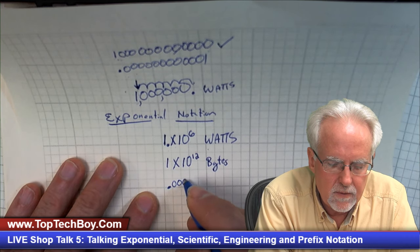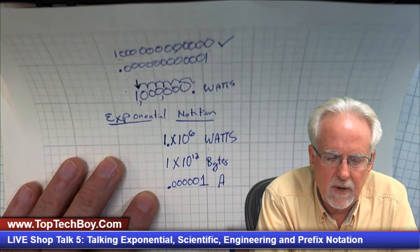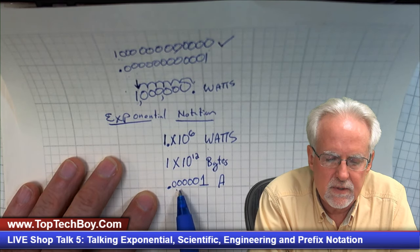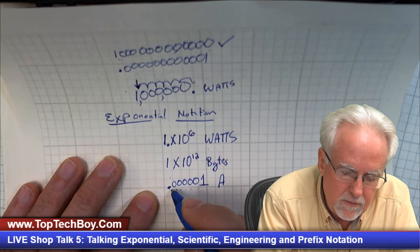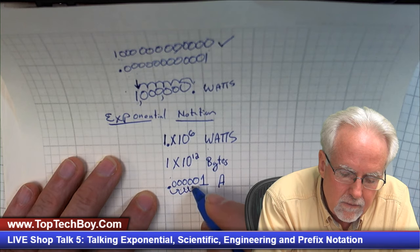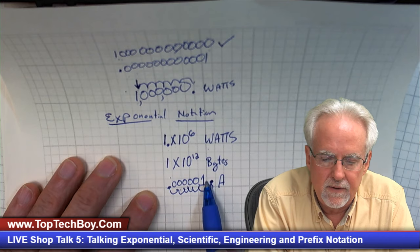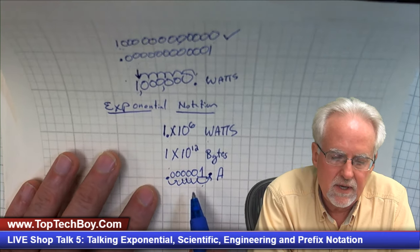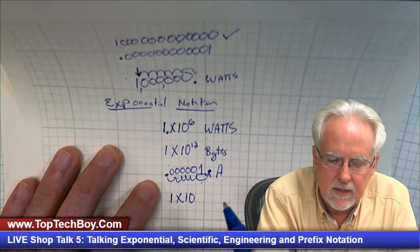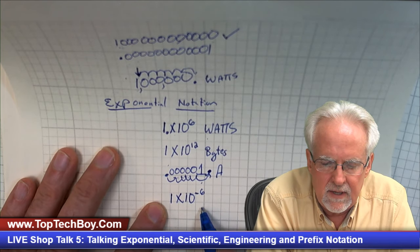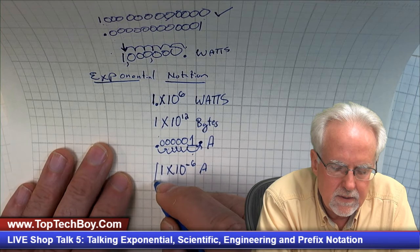If you just count the zeros, that won't work on all numbers. Let's look at a microamp: that would be 0.000001 amps. When you're going the other way, you can't count the zeros because there are five zeros but six places to move. Counting the zeros doesn't work, but moving the decimal point does. You move the decimal point six places and it becomes negative six — so this number would be one times ten to the negative six, which is one times ten to the minus six amps.